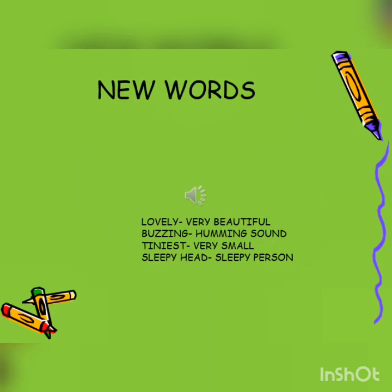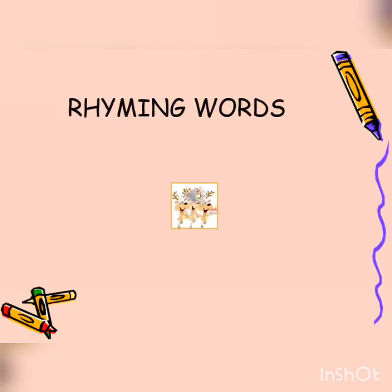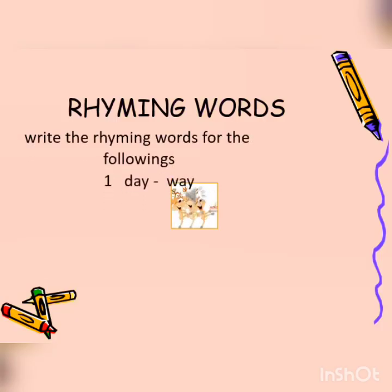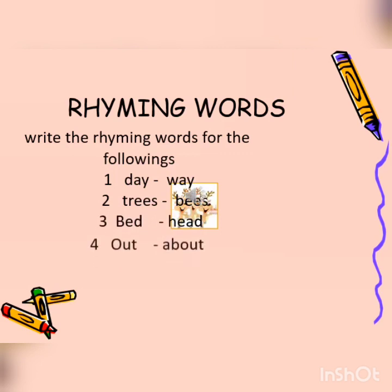The first word is day — what will be the rhyming word of day? Way. Another word is trees — bees. Bed — head. Out — about. Sheep — sheep.